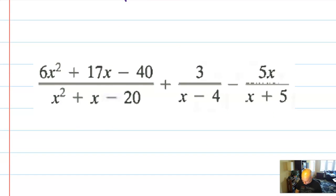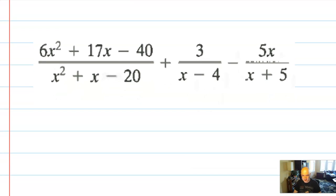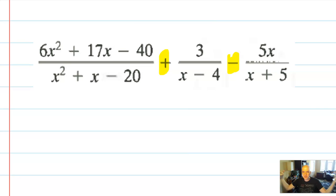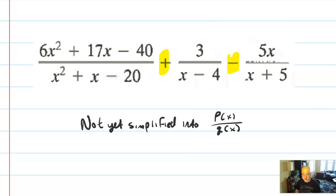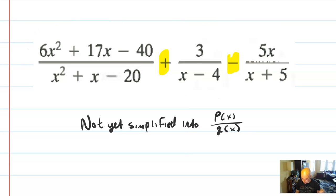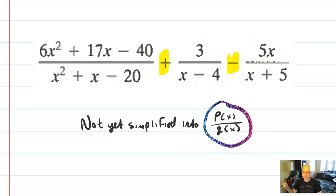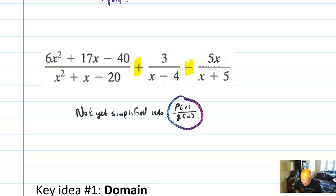Here's another example of a rational expression — it's pretty big. What you might notice is that it can have multiple terms. We are going to be working through this section on how to combine those terms. Eventually our goal will be to take something like this and simplify it until it's in the form p(x) over q(x). Right now this thing is not yet simplified, so you can't just identify the numerator and denominator.